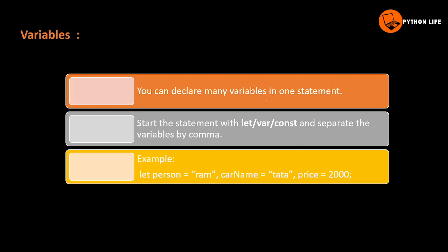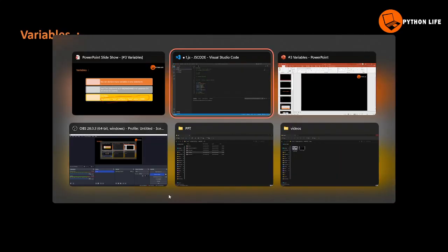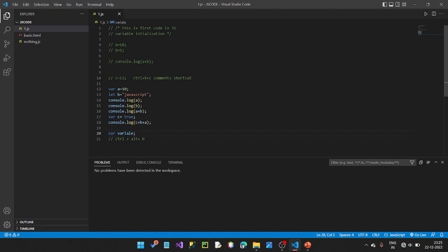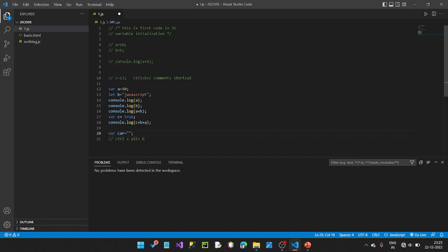Variables can be declared with many variables in one statement. Start the statement with let, var, or const, and separate the variables by comma. In one line, we declare multiple variables. For example: let person equal to 'rom', car name equal to 'data', price equal to 2000. Let's look at a var example: var car and add, car equal to data.